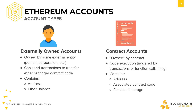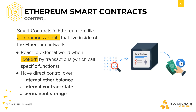Contract accounts are owned by smart contracts. They contain an address, associated contract code, and also persistent storage. Their code is executed when externally owned accounts or other contract accounts make transactions to trigger their code's function calls. Smart contracts in Ethereum are like autonomous agents that live inside the Ethereum network, whereas regular users controlling externally owned accounts are not. Smart contracts react to the external world when they are poked by transactions, which call specific functions. Smart contracts have direct control over an internal Ether balance, internal contract state, and also a permanent storage.